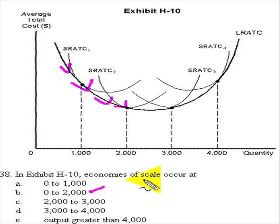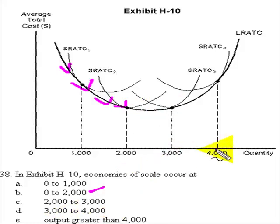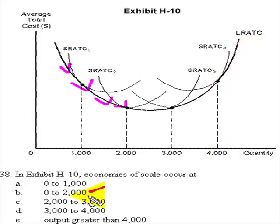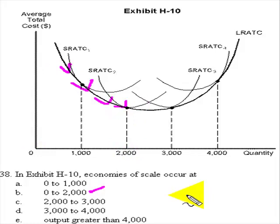What about from 2,000 to 3,000? No, because now costs are rising. 3,000 to 4,000 doesn't work because costs are rising further, and of course output greater than 4,000, average total costs are rising even much faster. So the answer is from 0 to 2,000 — average total cost is declining and you have economies of scale.